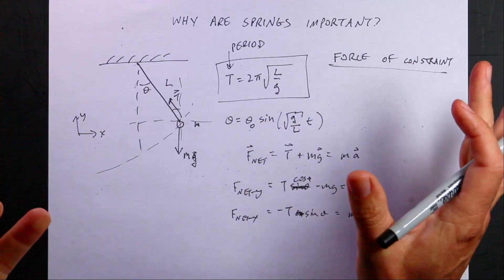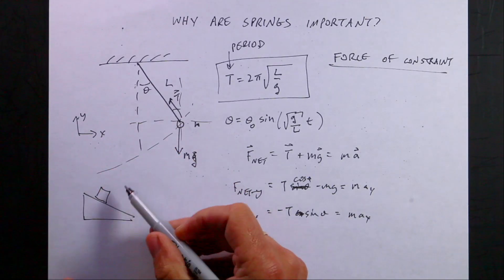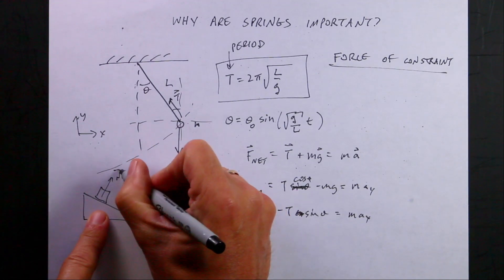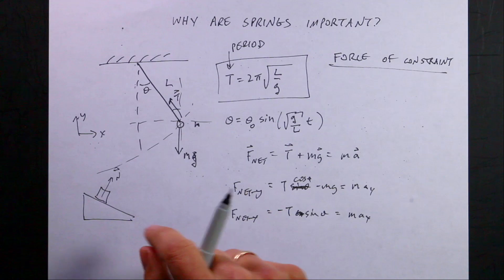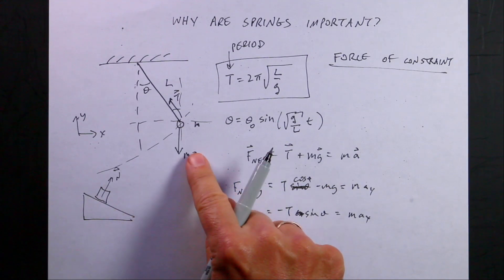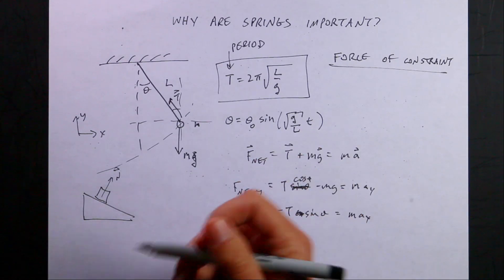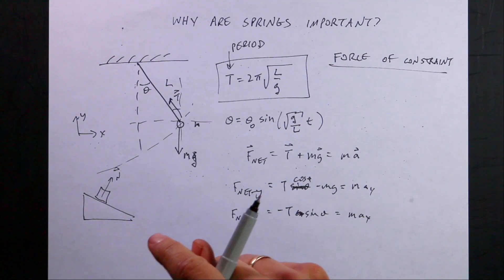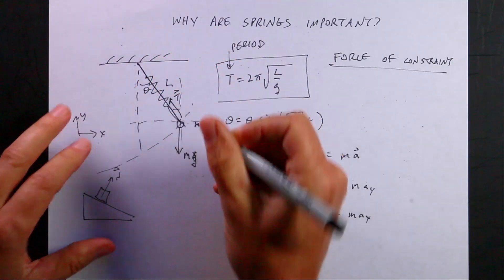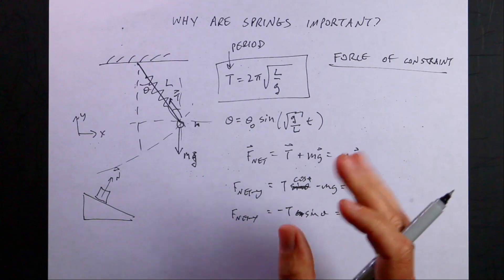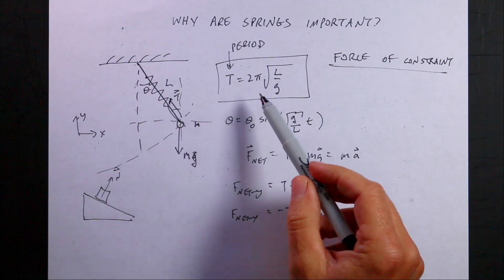Forces of constraint apply whatever force is needed to keep something constrained. Another example is a block on an incline — the normal force pushes perpendicular to prevent the block from going through the surface, but you don't have a direct equation for it. We do have equations for the gravitational force and the spring force. In a previous video, a mass on a spring pulled to the side behaves kind of like a pendulum. So what if I use a spring instead of a string?